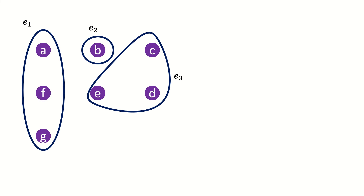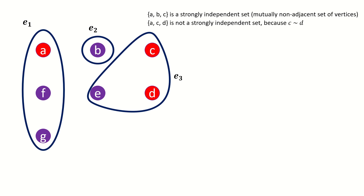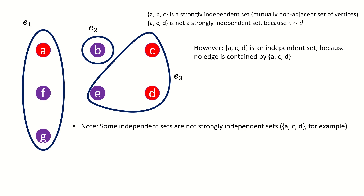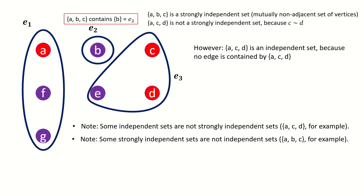For example, in this hypergraph, the set ABC is a strongly independent set because none of the vertices in ABC are adjacent to any other vertices in ABC. However, if we add vertex D and remove vertex B, we no longer have a strongly independent set, as C and D are adjacent. But we would have an independent set, because no edge is completely contained within our set. This demonstrates that some independent sets are not strongly independent sets. Also, while ABC is a strongly independent set, it's not an independent set, because ABC contains an edge as a subset — the loop E sub 2.